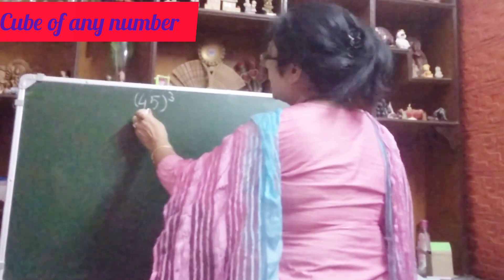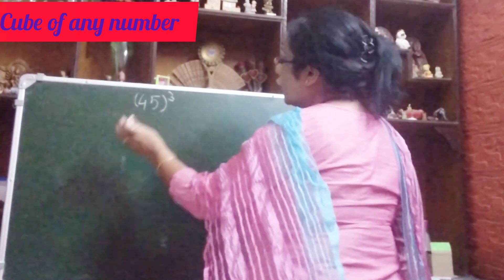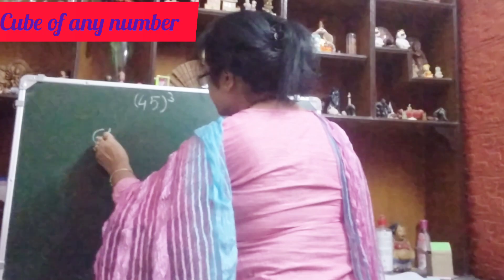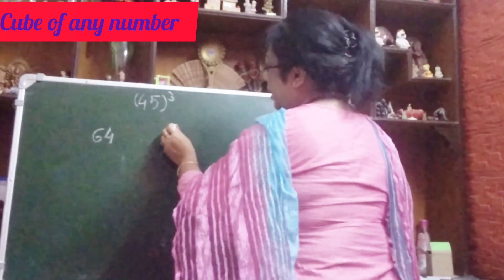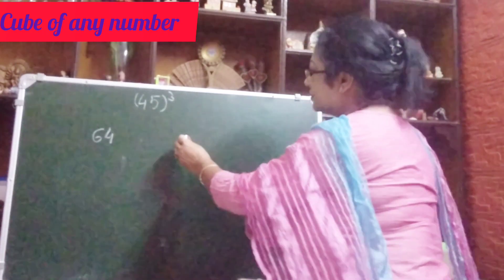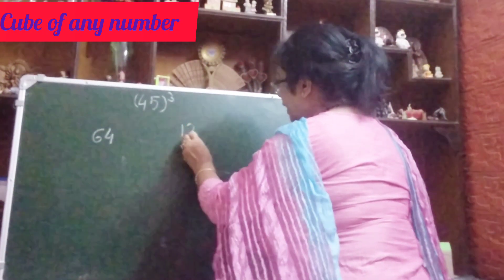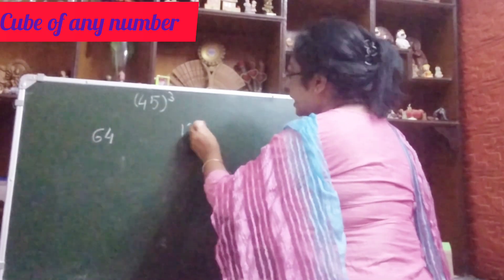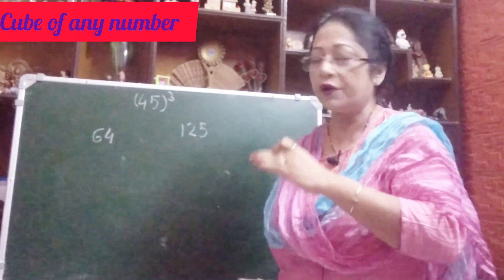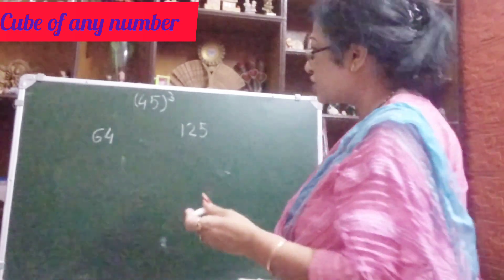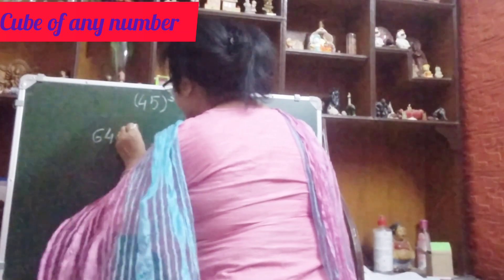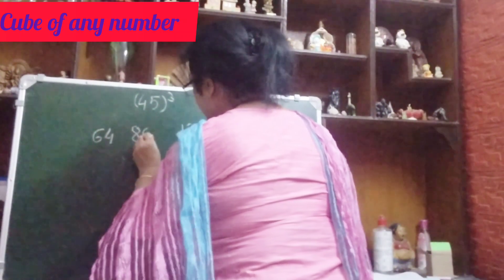As I said, first we will do 4 cube: 4×4=16, 16×4=64. Then 5 cube: 5×5=25, 25×5=125. Now what we will do — 4 squared multiplied by 5: 4×4=16, 16×5=80. So we write here 80.